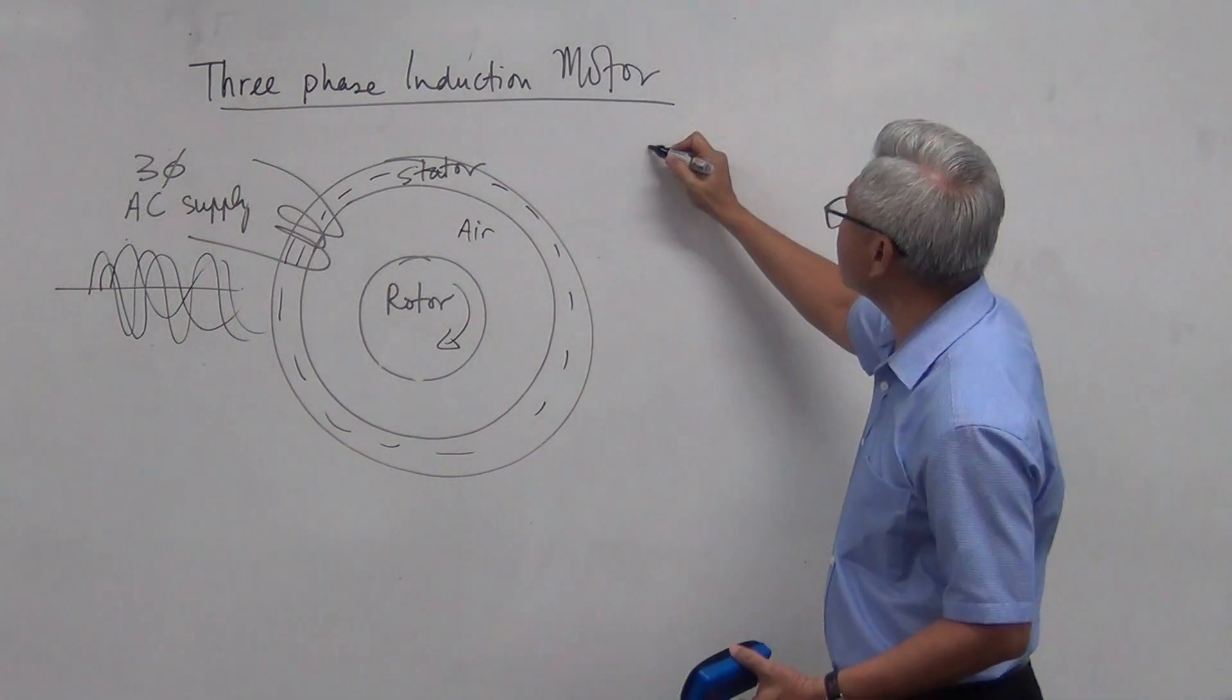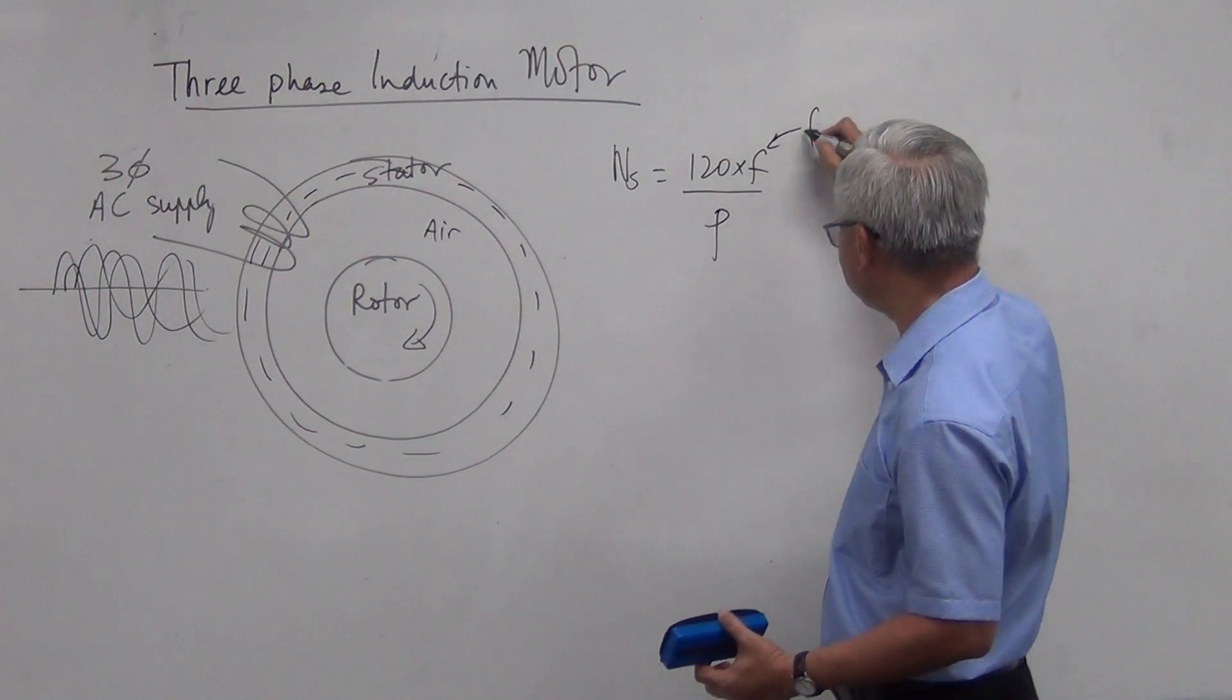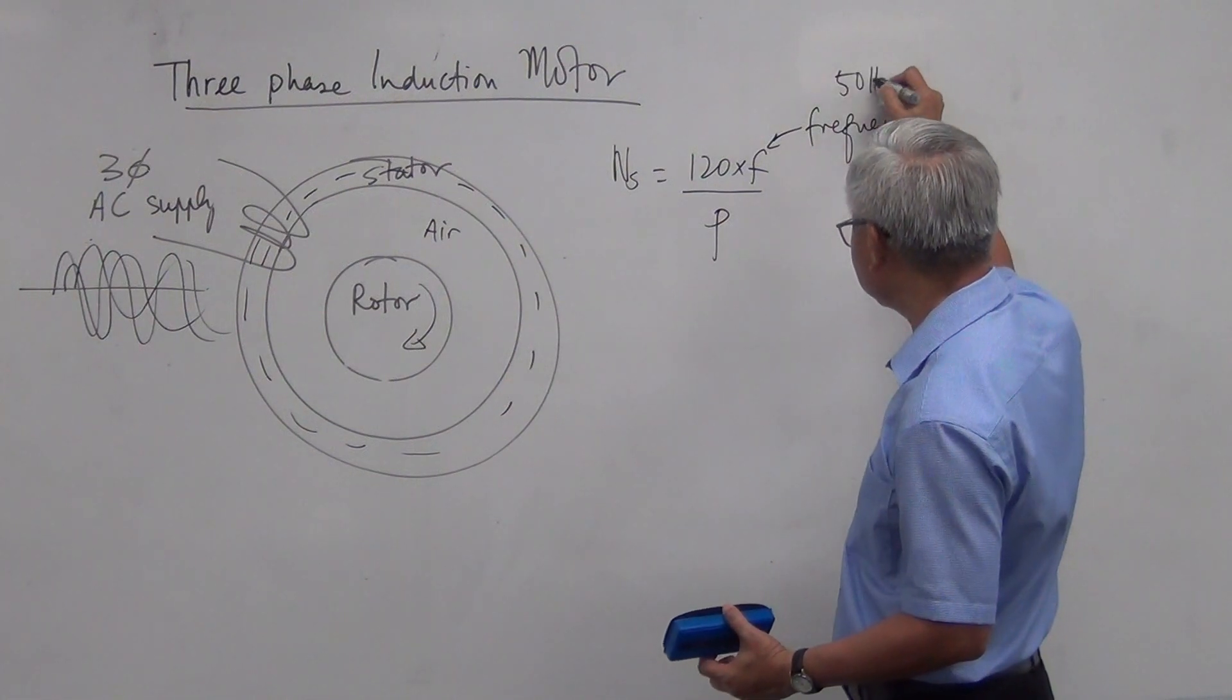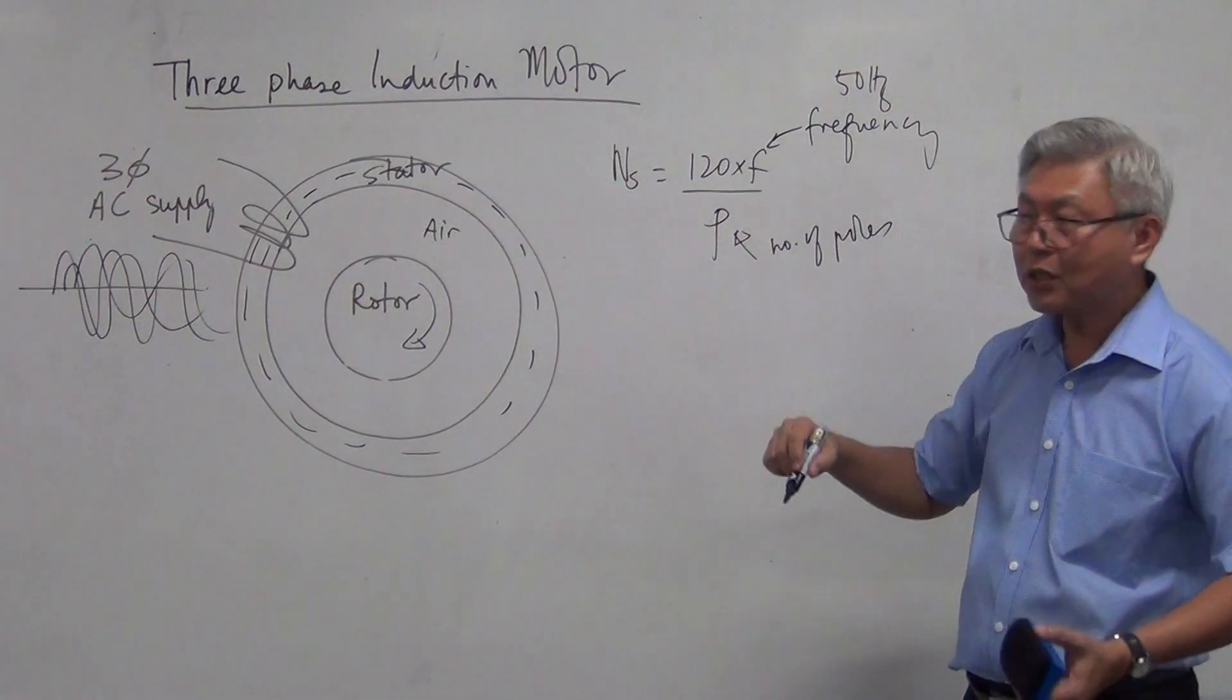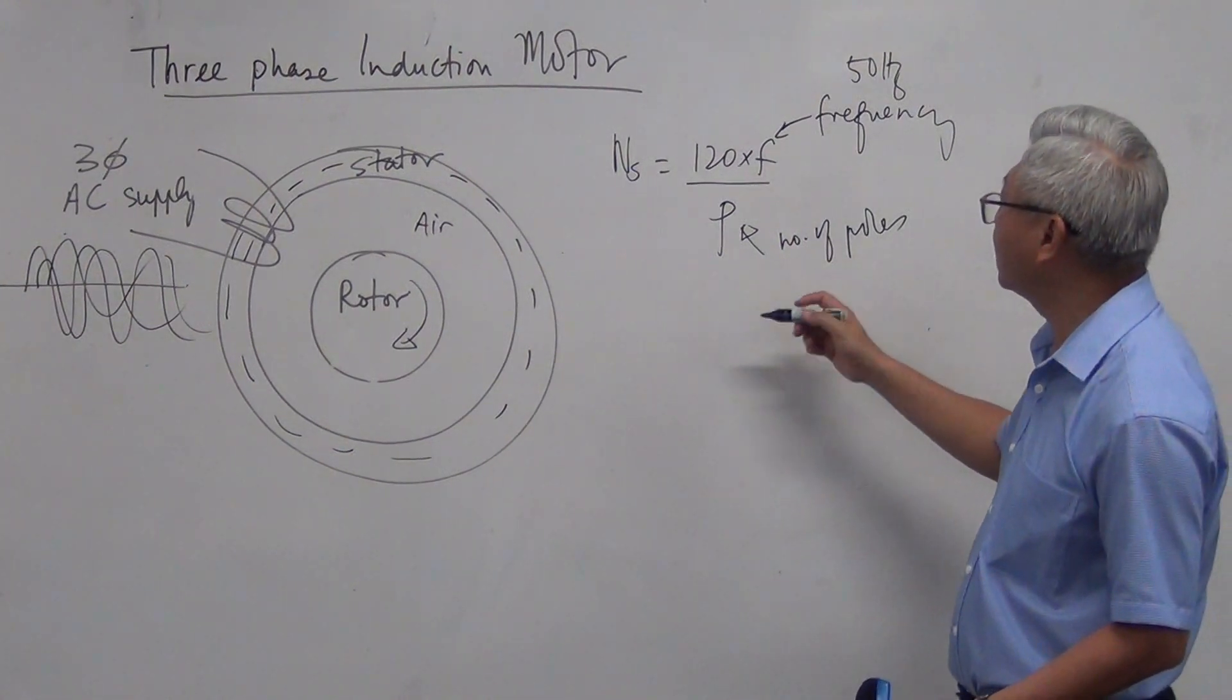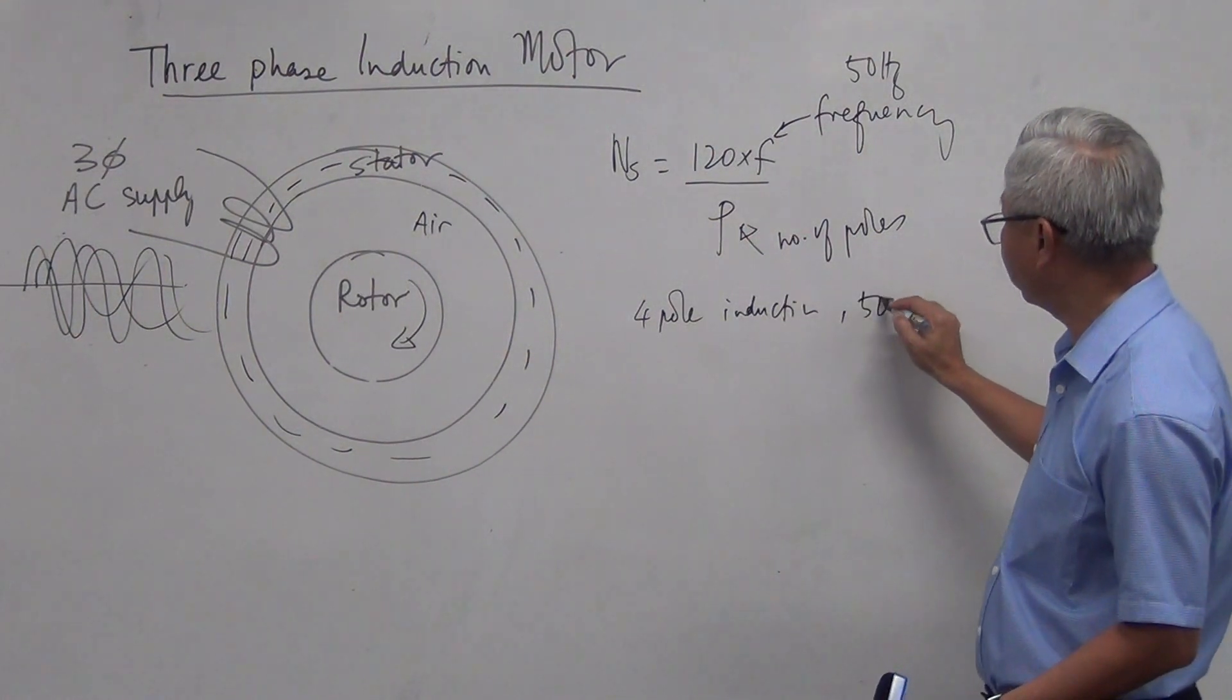Now, synchronous speed is governed by this formula 120F divided by P. F is the frequency of the power supply. And often in Singapore, it's 50Hz. And P is the number of poles, number of poles in the stator. So say for example, it's a four-pole machine. So, example, if this is a four-pole induction motor and operating on 50Hz.